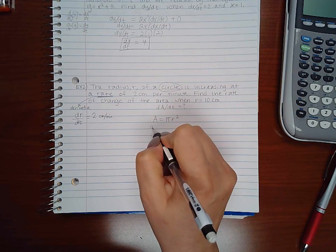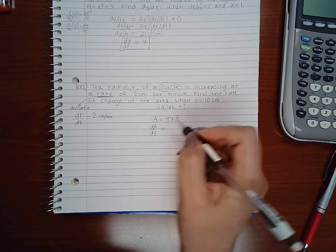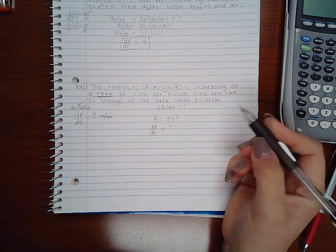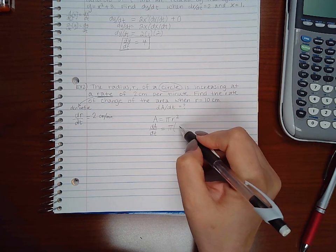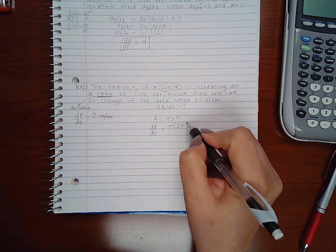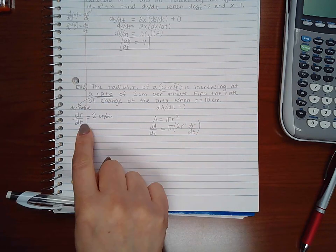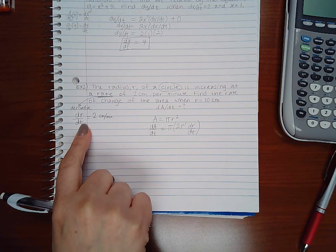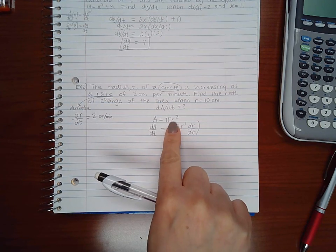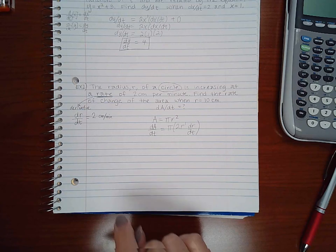So the derivative of a is da/dt. Here this is a constant multiplier pi, and the derivative of r squared is 2r to the power 1 dr/dt. Since I'm differentiating with respect to t and that base is not a t, I do have to take the derivative of that base.